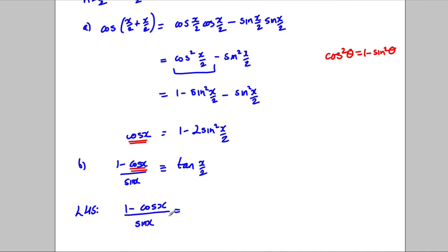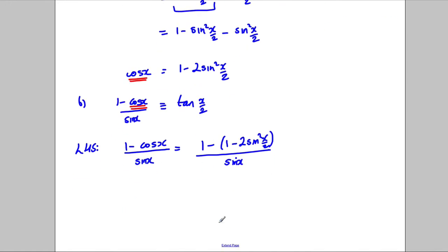So I'm going to start off with the left hand side, which is 1 subtract cos X divided by sine X. And I'm going to replace the cos X with the answer to part A, which is this thing. So it's 1 subtract 2 sine squared X over 2, all divided by sine X. Okay, so this is going to be equal to 1 subtract 1 is nothing. And a negative negative is going to be positive. So 2 sine squared X over 2 sine X.